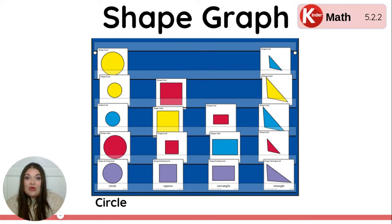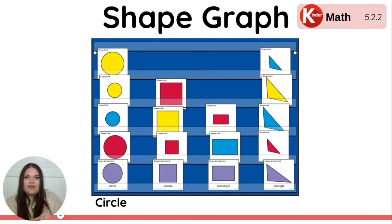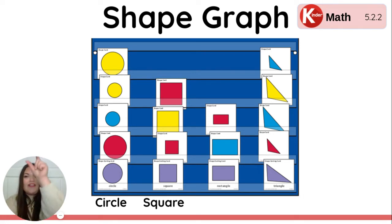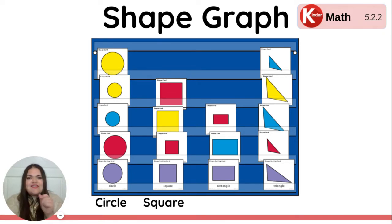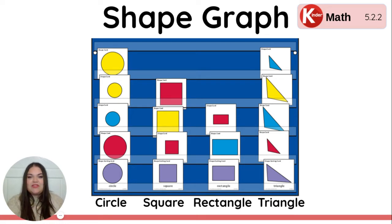First on our graph, we have some circles. Do you see how all of the circles are in one column? They're in one tower. What shape is in the next column? Squares — there are our squares, all in one column together. That's what helps us read a graph so quickly. The next one — what shape is that? Rectangles, there are our rectangles, all in the same tower or the same column. And that last column — triangles. Very good. There are our four shapes.